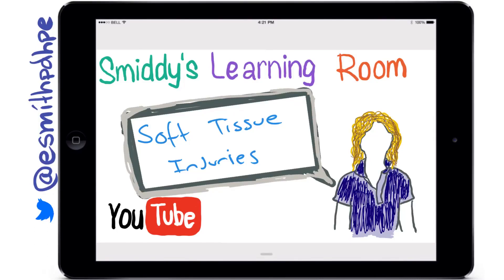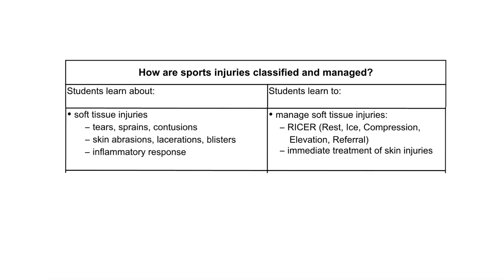Welcome back to Smitty's Learning Room. Today we're going to have a look at the next part of the syllabus for sports med and we're going to explore soft tissue injuries. If you haven't already watched the video on classification of injuries, you'll need to watch that before this one. We're looking at the focus question: how are sports injuries classified and managed? And we're looking at the learn about dot point: soft tissue injuries.